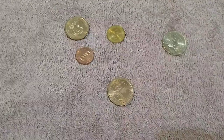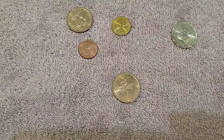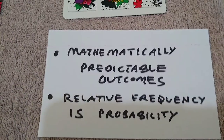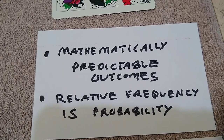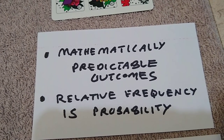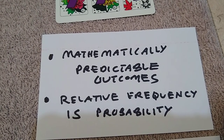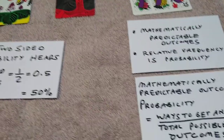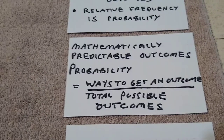In chapter 5 we look at probabilities. We'll be looking at two ways of calculating probabilities: mathematically predictable outcomes and relative frequency. This video will look at mathematically predictable outcomes. For mathematically predictable outcomes, the probability is the ways to get an outcome divided by the total possible outcomes.